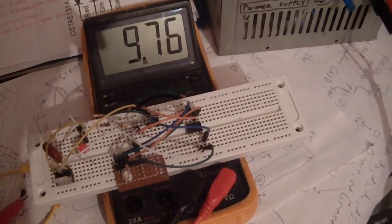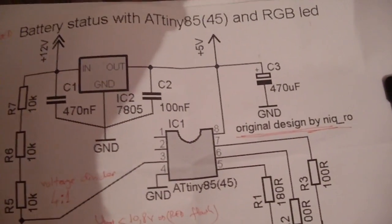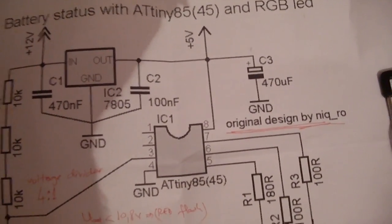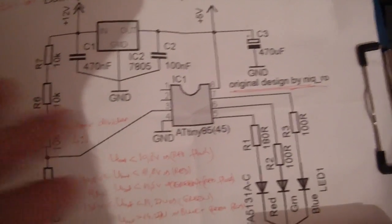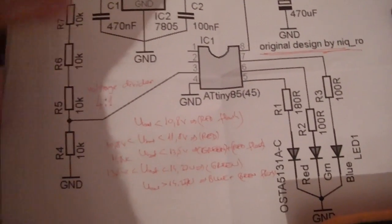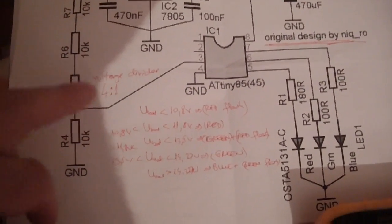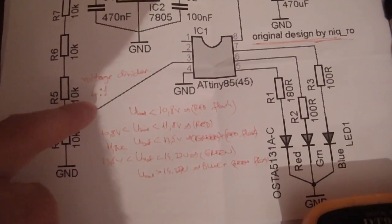Here is a battery status indicator with ATtiny85 or ATtiny45 and RGB LED. The schematic is very simple. Here is a voltage divider with 0.401.